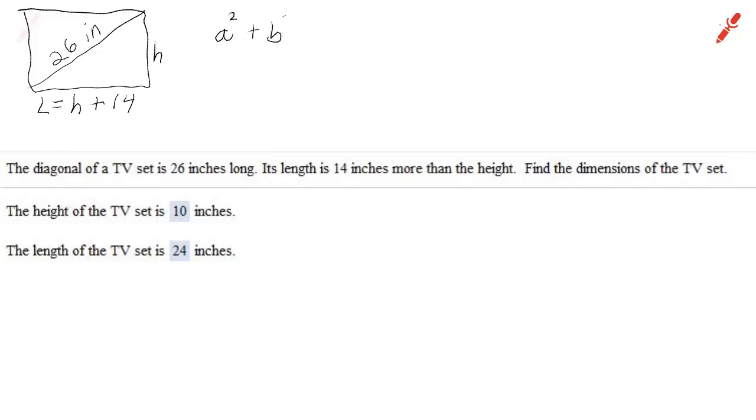Well I drew a picture and now because we're dealing with the length of the sides of a right triangle I am using the Pythagorean theorem. Notice you also have the answers here so we can check ourselves. All right, so what I did was I let a be h and b be h plus 14 and c be 26, the hypotenuse.